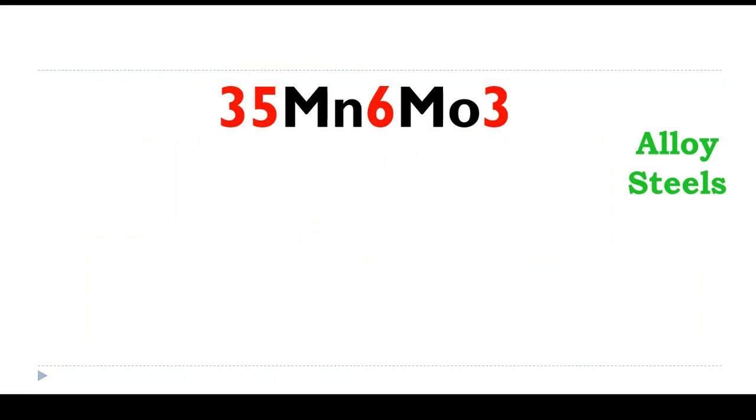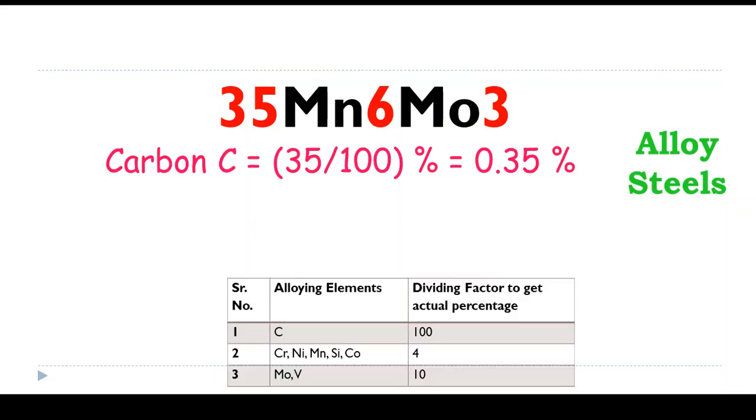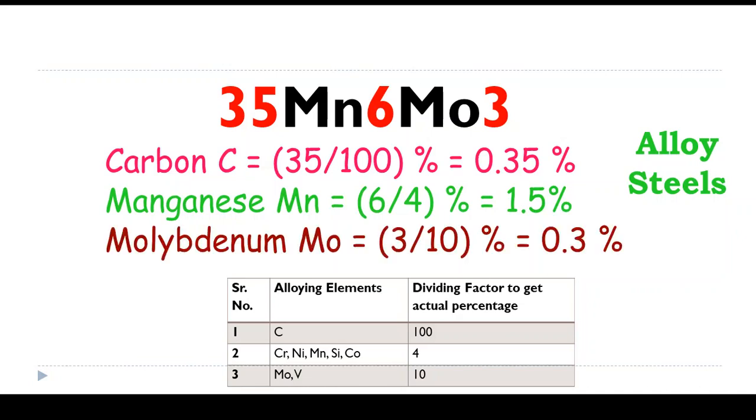Let us see one BIS designation of alloy steels. 35 divided by 100 indicates carbon percentage. Now we have to see the letter table for the other materials. Mn is in the second serial number so dividing factor is 4, so 6 divided by 4 equals 1.5%. Mo is in the last table so 3 divided by 10 equals 0.3%.